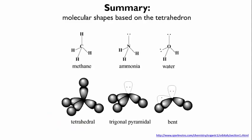Methane, ammonia, and water are all based on the tetrahedral geometry. However, depending on how many bonds and how many lone pairs are on the central atom, the true shape of the molecule can be either tetrahedral, trigonal pyramidal, or bent.